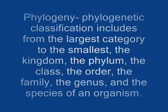Phylogenetic classification includes, from the largest category to the smallest: the kingdom, the phylum, the class, the order, the family, the genus, and the species of an organism.